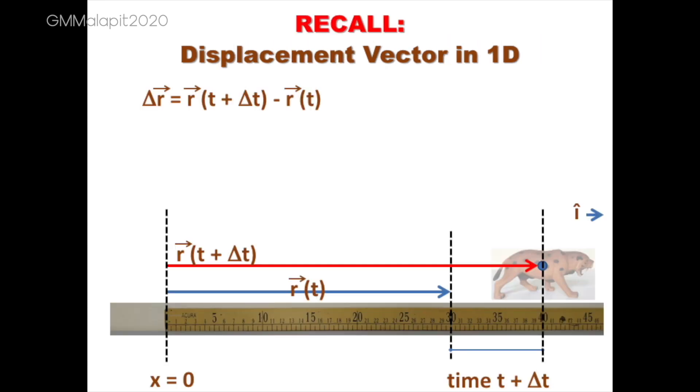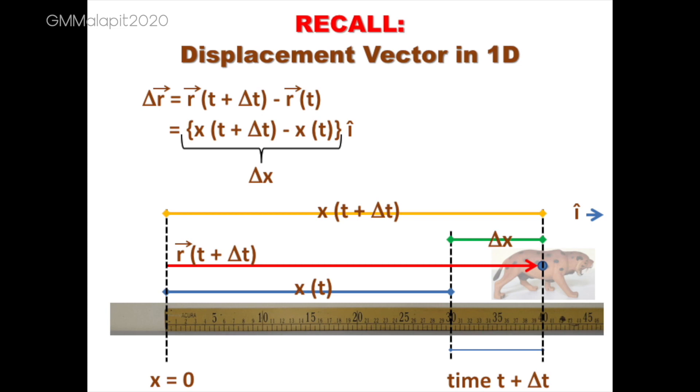Recall that the displacement vector delta r is equal to r of t plus delta t minus r of t, which is also equal to x of t plus delta t minus x of t i hat, where delta x is the component of the displacement vector and i hat is the direction.